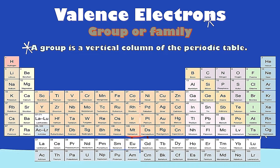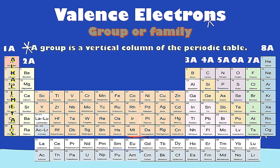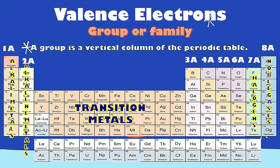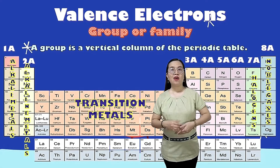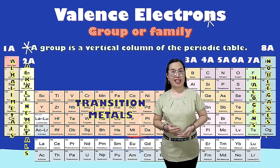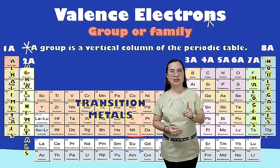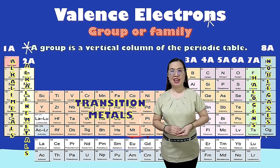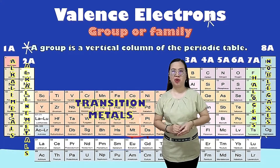So these are the groups in the periodic table: 1A, 2A, 3A, 4A, 5A, 6A, 7A, and 8A. We also have alkali metals, alkaline earth metals, halogens, noble gases, and of course the transition metals. Meaning, all the elements in group 1A have 1 valence electron, group 2A have 2 valence electrons, and so on.